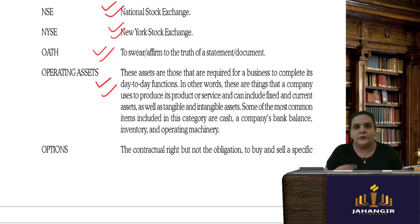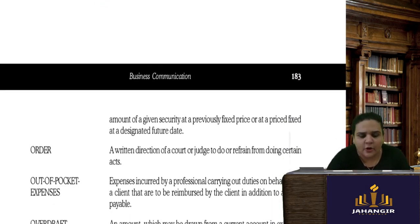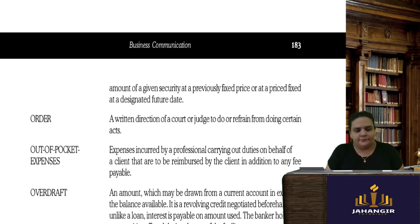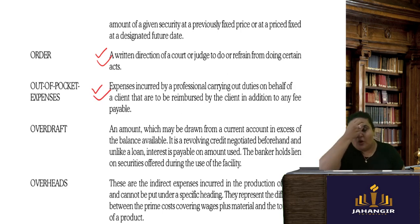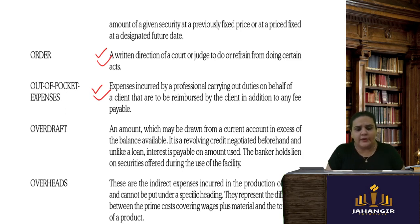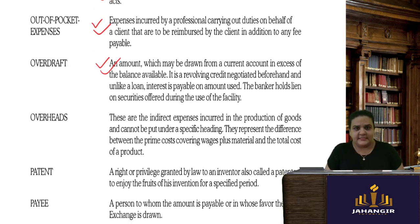An oath is a sworn affirmation stating that whatever you say is the truth. Operating assets are the most important assets for day-to-day functions of the business. Options give a contractual right but not an obligation — you have the right to buy or sell but it is not obligatory. An order is a written direction of the court or judge to refrain from or to do an act.